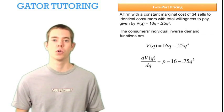So taking the derivative of total value here, we find price to be equal to 16 minus 0.75q squared.